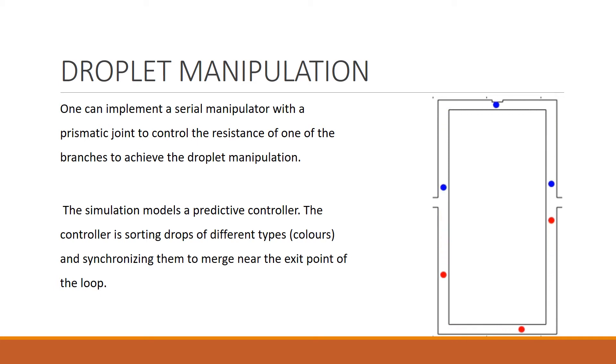The controller used in the model is able to sort different types of drops, in this case different colors of drops into different branches, and synchronize their flow rates to make them merge at the output junction. The controller used in the model is a predictive controller which predicts the future and then manipulates the resistance with the objective to merge the drops at the output junction.